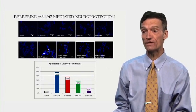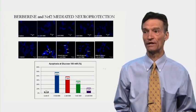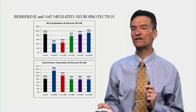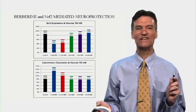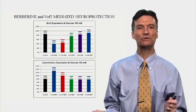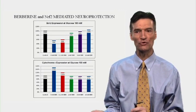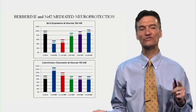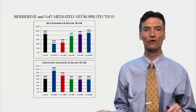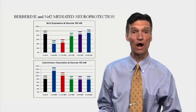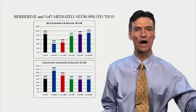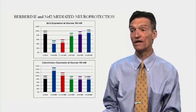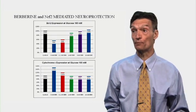Apoptosis occurs in 48% of cells — this is blunted with berberine. Bcl-II expression, an anti-apoptotic marker, is lost with high sugar but protected with berberine. Leakage of cytochrome C from the mitochondrion into the cell fluid — an apoptotic phenomenon — is enhanced with high sugar and blunted with berberine.